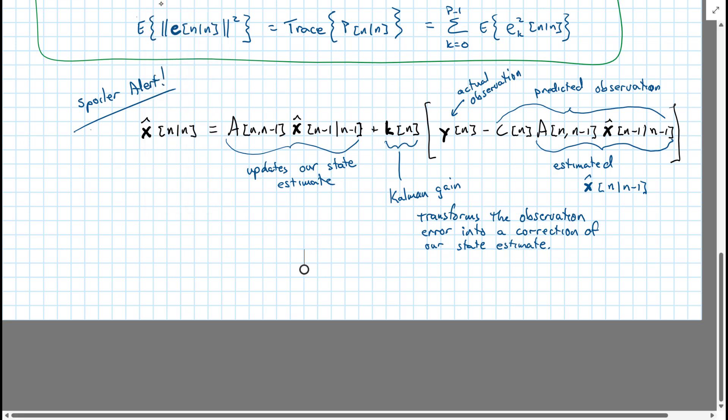And before we finish this up, let's go ahead and make a few notes just to keep track of what everything is. This is going to be a P by 1 column vector. C is going to be an M by P measurement matrix. V, we'll get to V in just a minute. A is going to be a P by P matrix. The Kalman gain is going to be a P by M matrix. This is going to be an M by 1 vector.